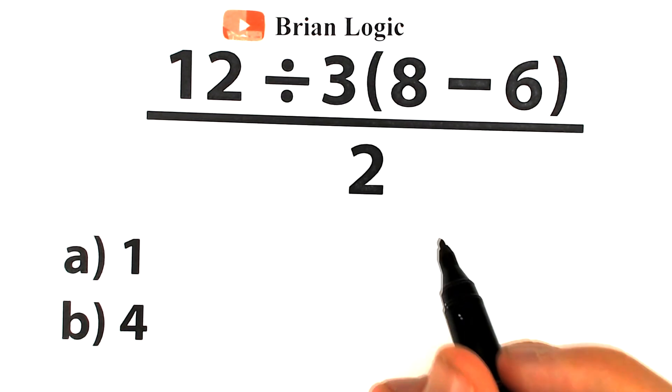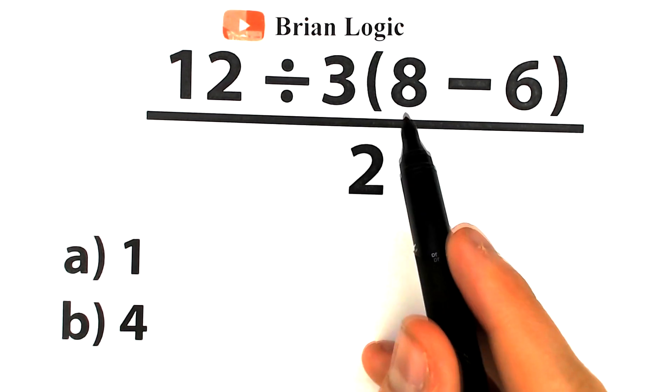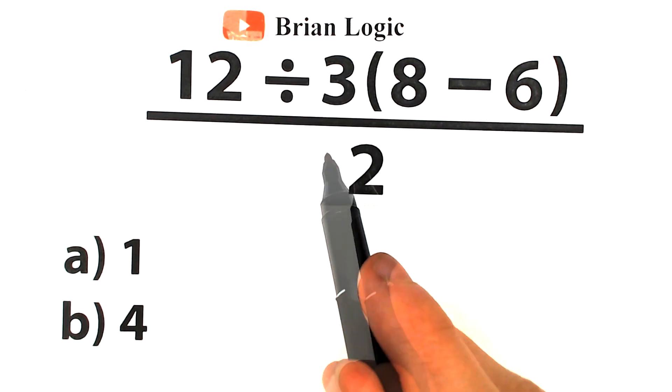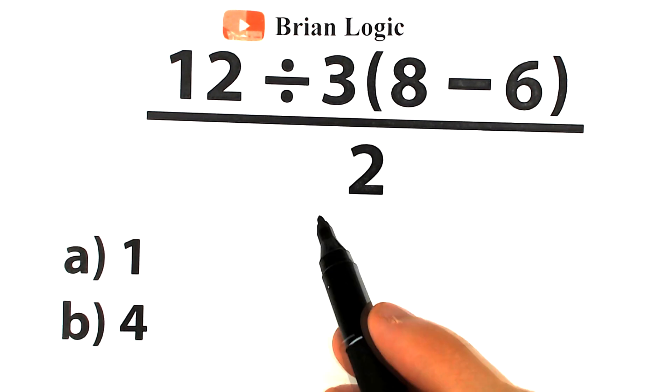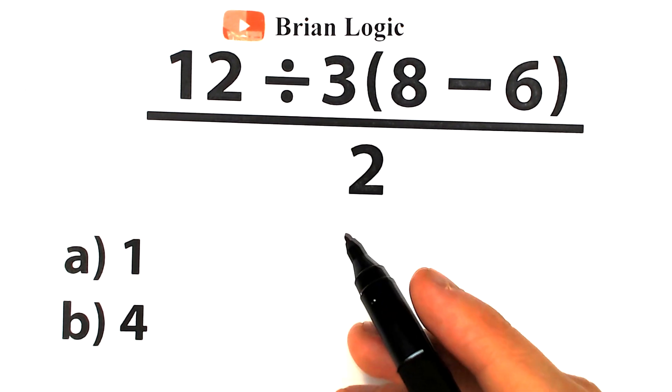Welcome back to my channel BrainLogic and Viral Question today. The problem is: 12 divided by 3, times (8 minus 6) inside parentheses, and we divide all of these by 2. What is the correct answer?